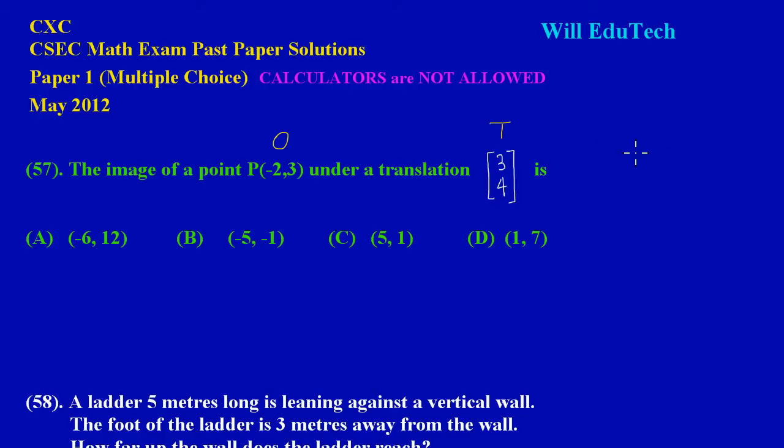Obviously, object plus translation vector is equal to the image point. That's just a neat little formula that you can use to calculate an image point. The object point that they gave us, we're going to write in vector form, so we would have -2 at the top and positive 3 at the bottom.